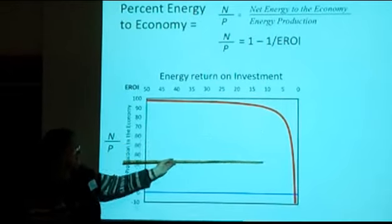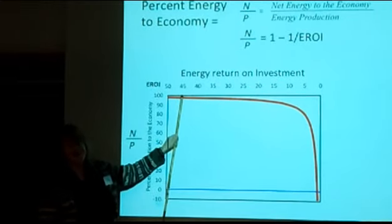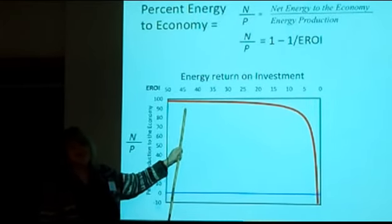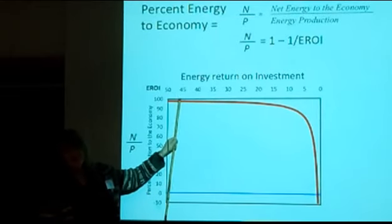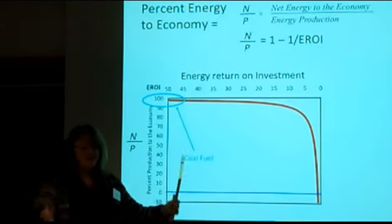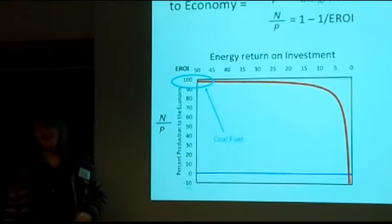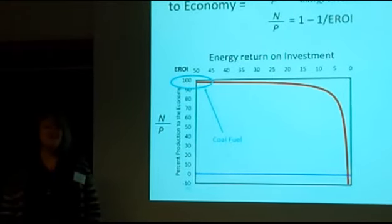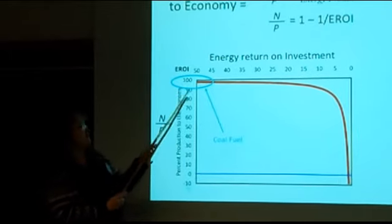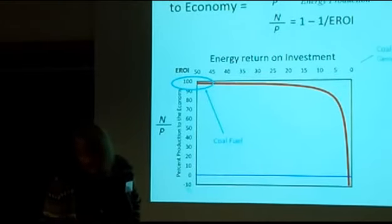This percentage of all the energy we produced that went to the economy is what we want to be as high as possible. When we're over in the high zone, we are growing and having a really good time. That's your industrial revolution: if you take all the energy to walk over to a big pile of coal, pick it up, and chuck it into a furnace, you get a huge return on that investment. You have a lot of surplus to spend on other things even without high efficiency.